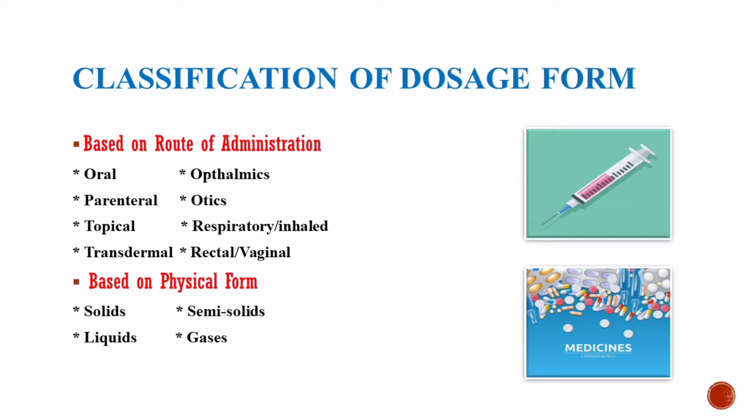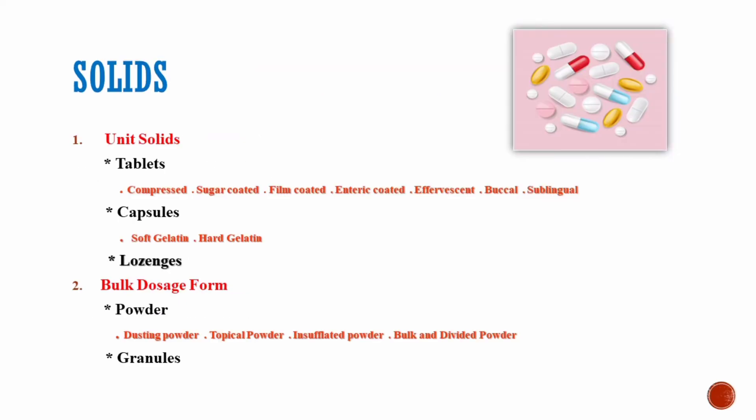On the basis of physical form, they are divided into solids, semi-solids, liquids, and gaseous dosage forms. Solid dosage forms are basically divided into two classes: the unit solid dosage form and bulk solid dosage form. Unit solid dosage forms contain tablets, capsules, and lozenges, and bulk solid dosage forms contain powders and granules.